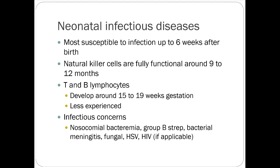Adverse effects of methylxanthines are just as you'd expect: tachycardia, jitteriness, GI irritation, diuresis, and glucose intolerance. Neonates are most susceptible to infections up to six weeks after birth. Natural killer cells become fully functional around 9–12 months; T and B lymphocytes develop around 15–19 weeks gestation. Premature kids are more likely to get opportunistic and nosocomial infections. Key pathogens include group B strep, bacterial meningitis, fungal infections, HSV, and HIV — the latter two are transmission-related and should be screened for in mothers.